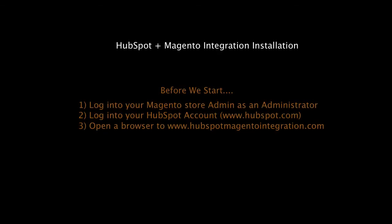This video will demonstrate how to install and configure the HubSpot Magento integration extension. Before we begin, log in to your Magento store as a full administrator. Two, log in to your HubSpot account, or you can create a trial account at hubspot.com. And three, open a web browser to the website that you see on the screen.